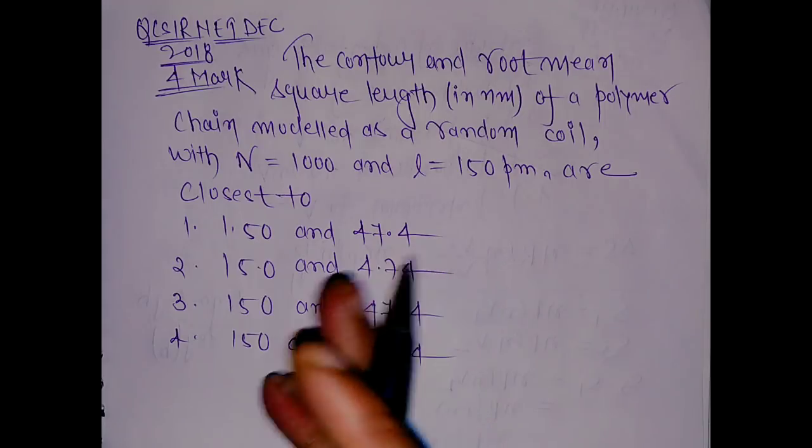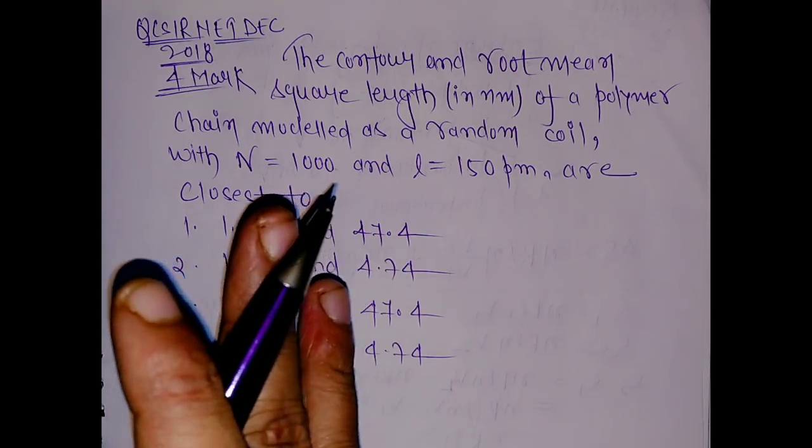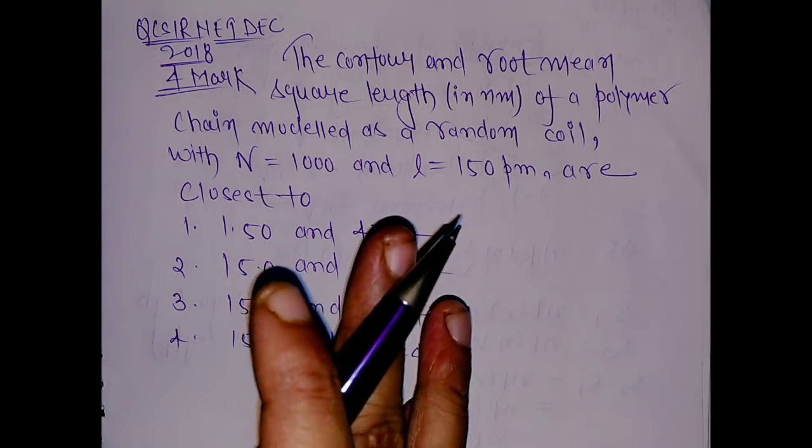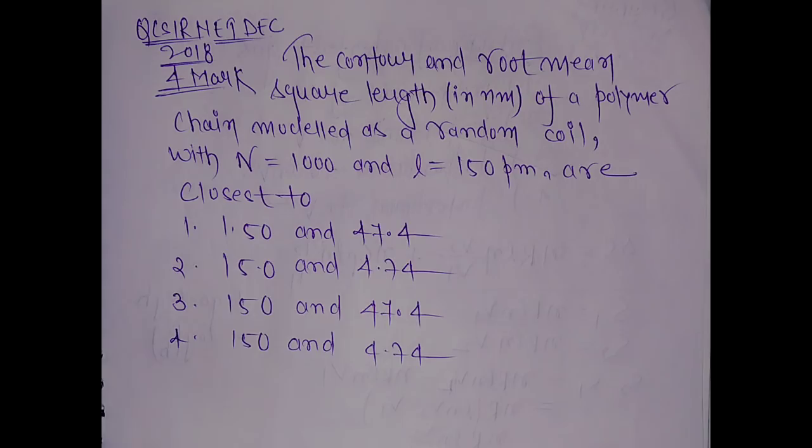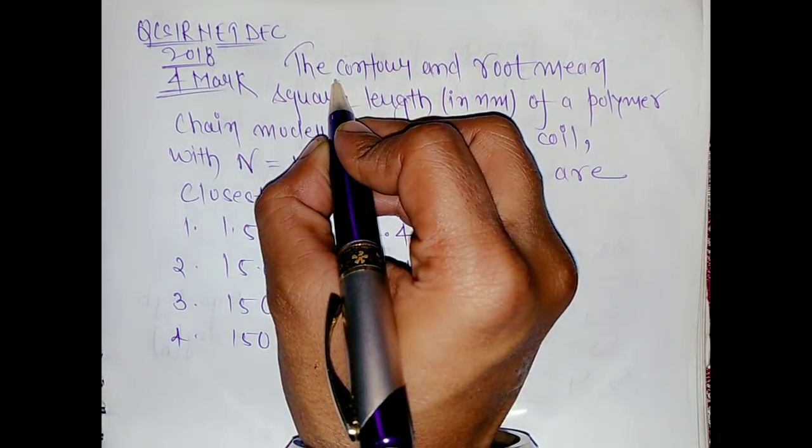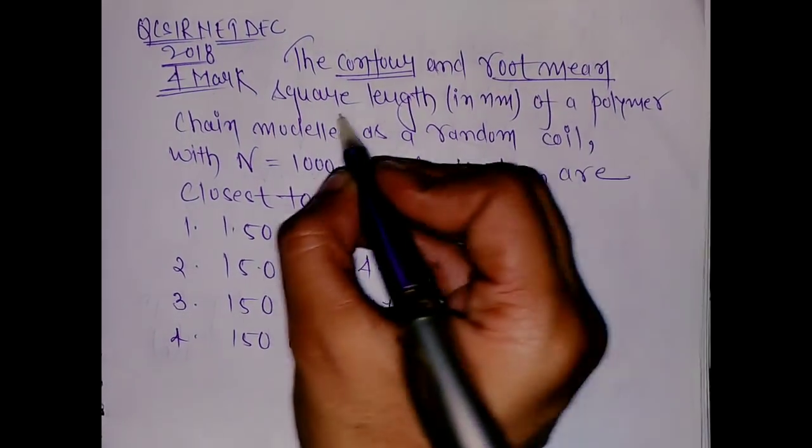Hello everyone, this question came for 4 marks in CSIR NET December 2018 examination and it is very easy. It came from polymer chemistry and the examiner is asking about the contour and root mean square length.